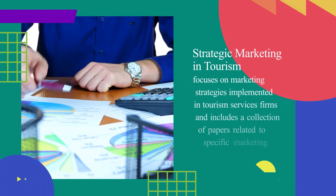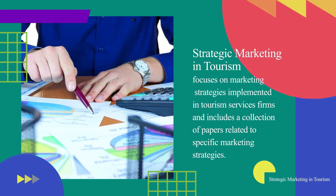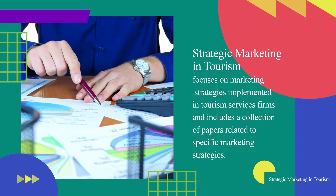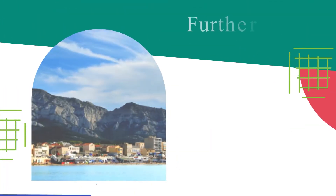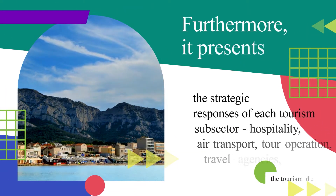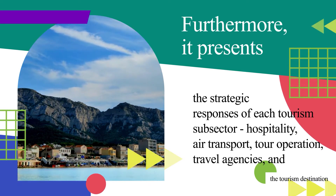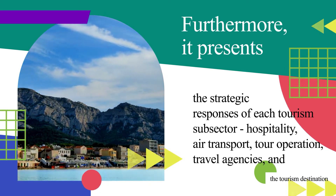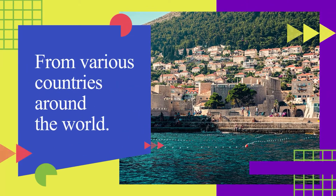The Tourism and Sustainability course critically explores the most significant universal geopolitical norms of the last half century through the lens of new forms of tourism. Strategic Marketing in Tourism focuses on the marketing strategies implemented in tourism service forms and includes a collection of papers related to specific marketing strategies, presenting the strategic response of each tourism subsector — hospitality, air transport, tour operations, travel agencies, and tourism destinations from various countries around the world.